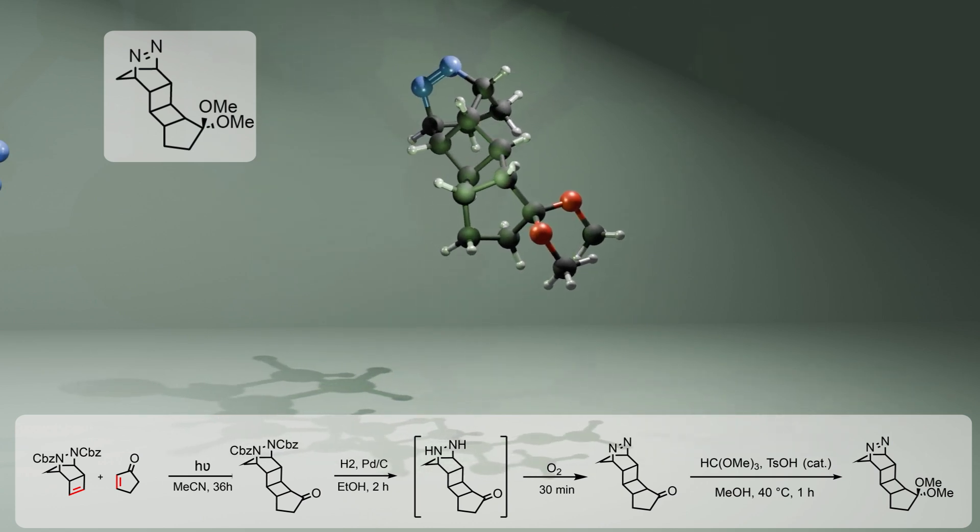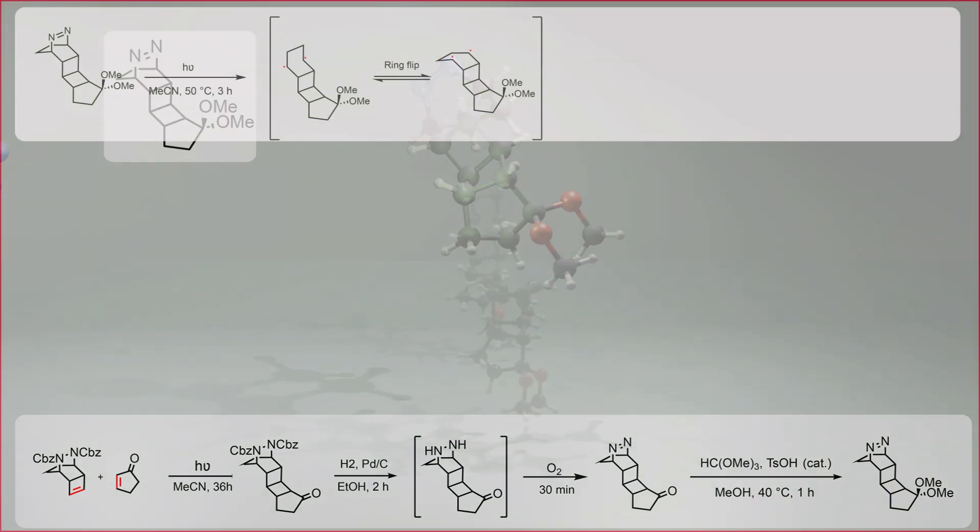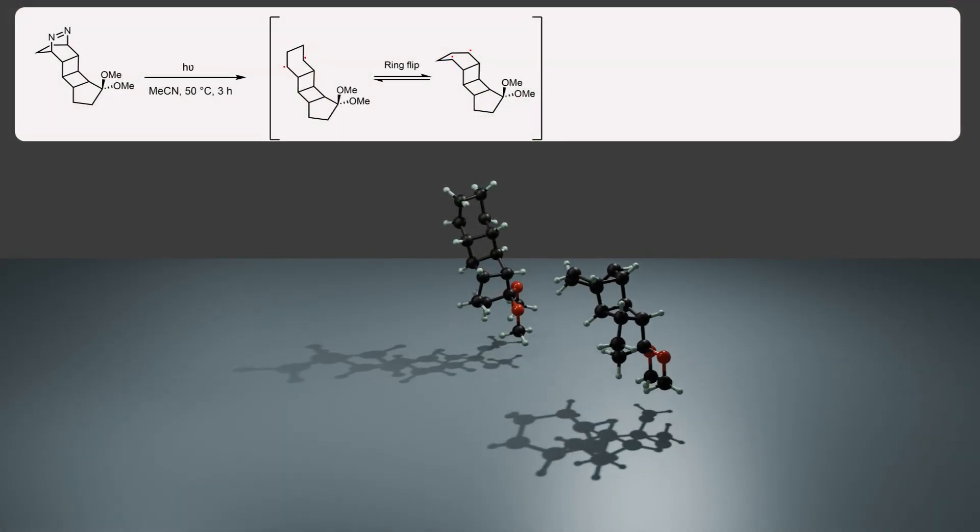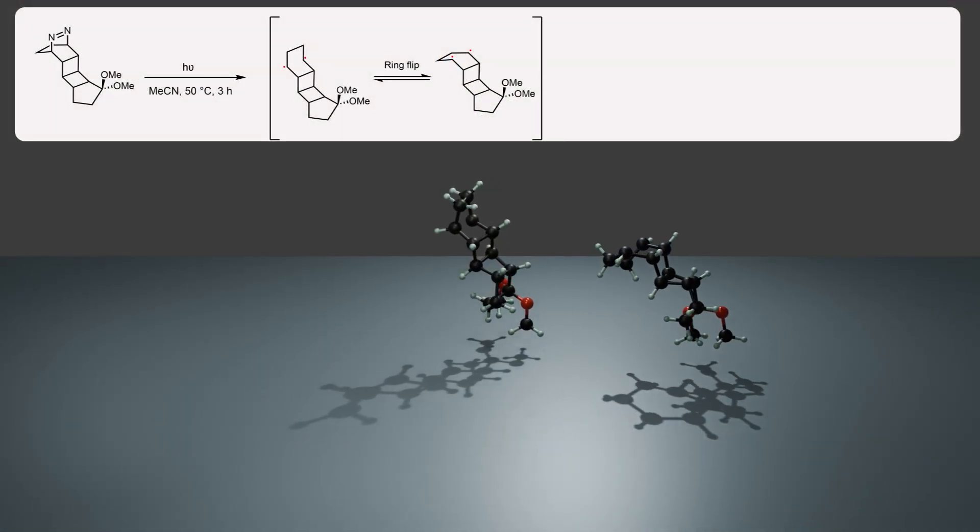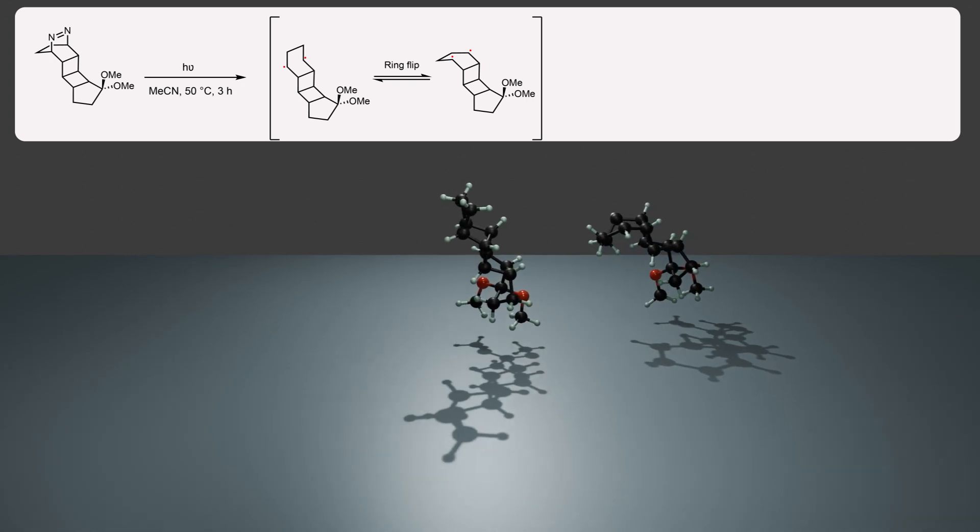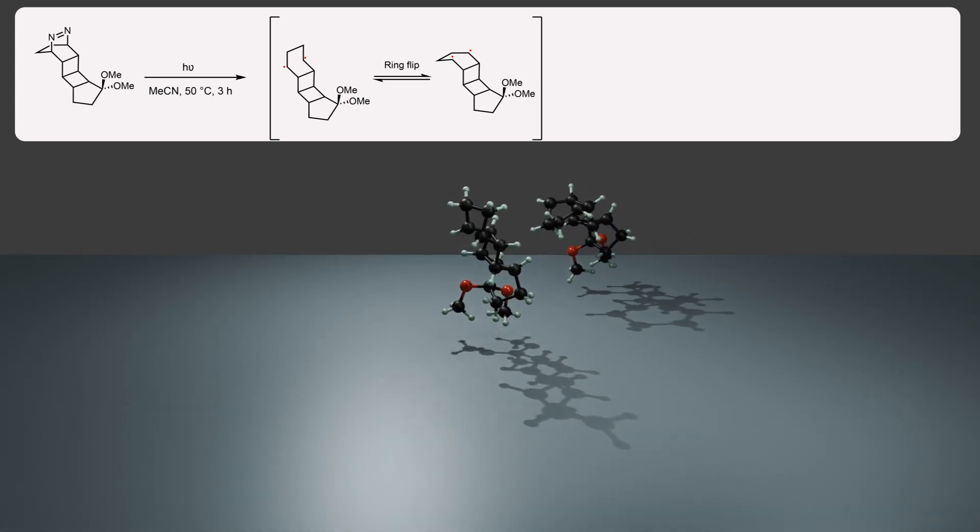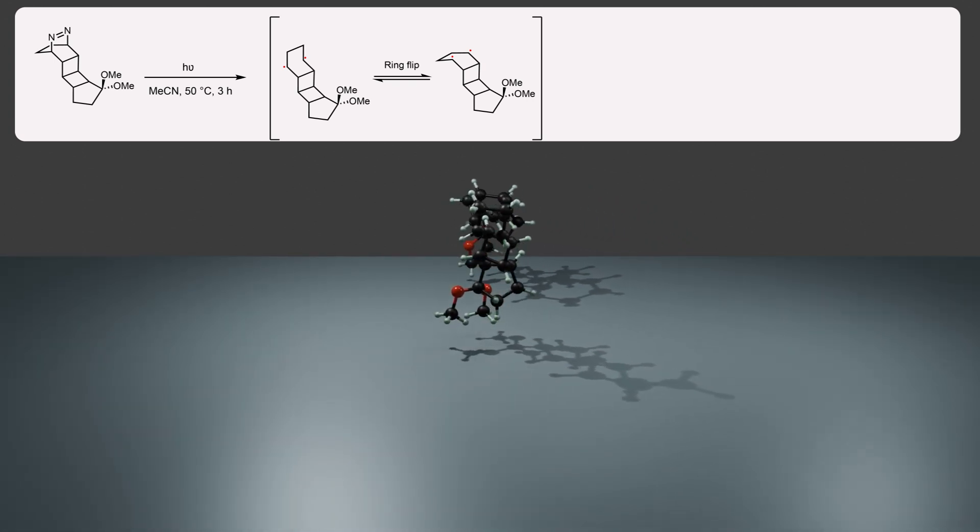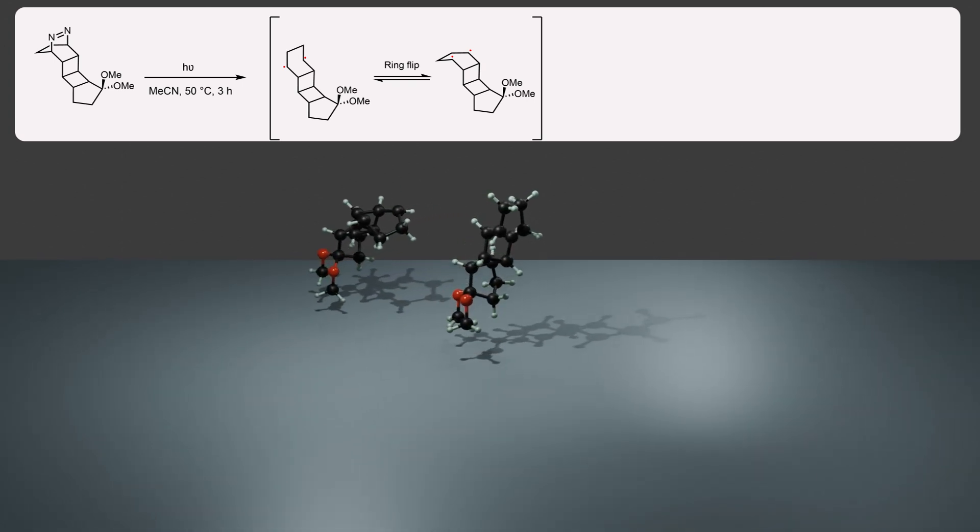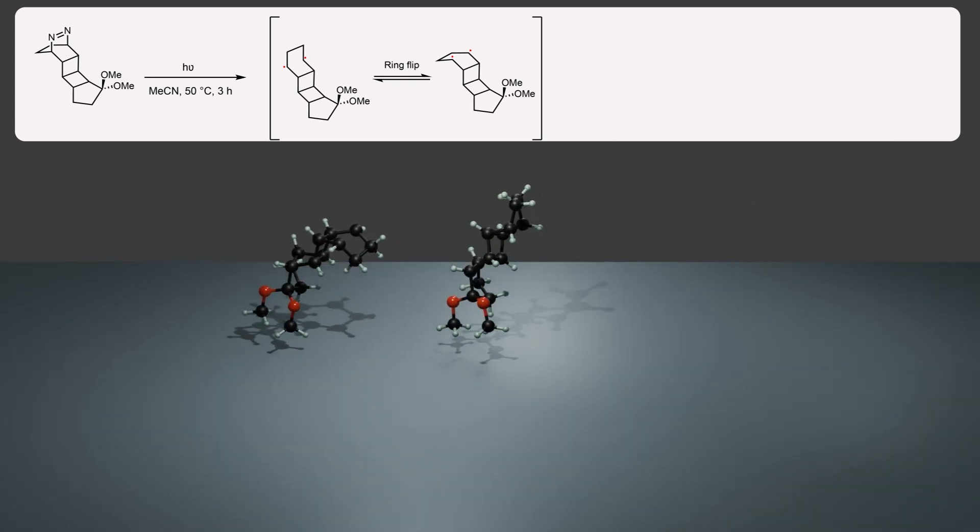Now the stage is set for the projected key step, which is expulsion of nitrogen. In one possible mechanistic pathway for this transformation, diazo decomposition and expulsion of nitrogen might generate a diradical species, which can undergo ring flip to afford the right orientation of cyclobutane rings.